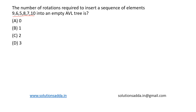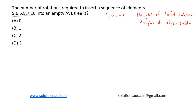First of all, an AVL tree is a height-balanced binary search tree. The balancing factor in an AVL tree should be either minus 1, 0, or plus 1. The balancing factor is calculated as height of left subtree minus height of right subtree. If the balancing factor is not among these three values, then the balance condition is violated, and we have to perform one of the following rotations: LL, LR, RL, or RR.